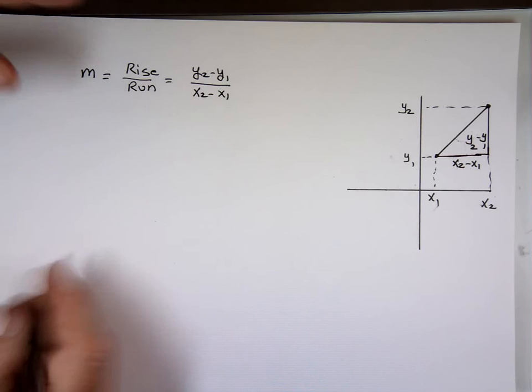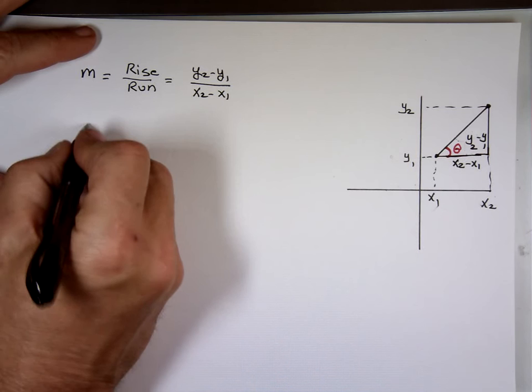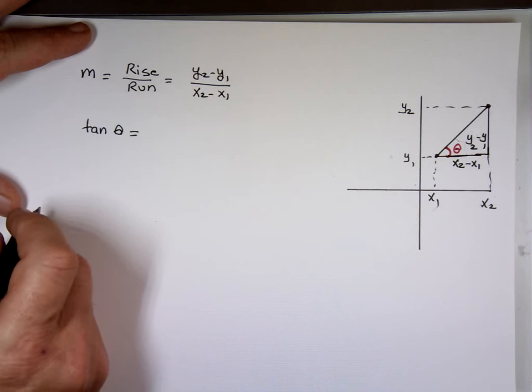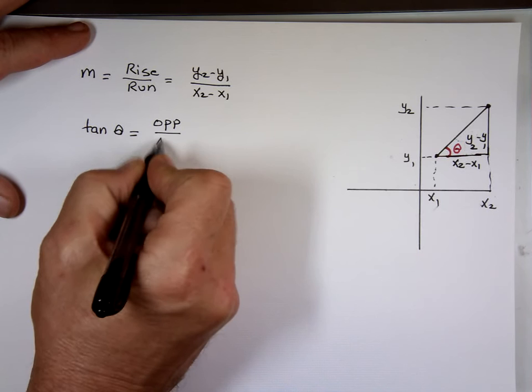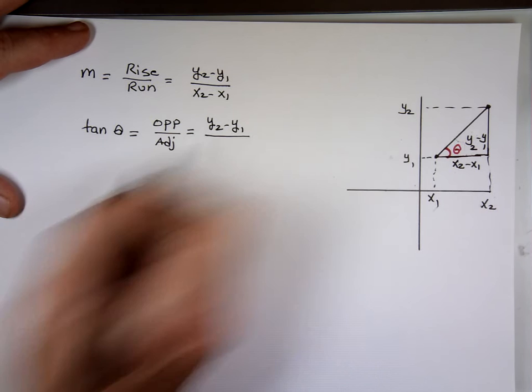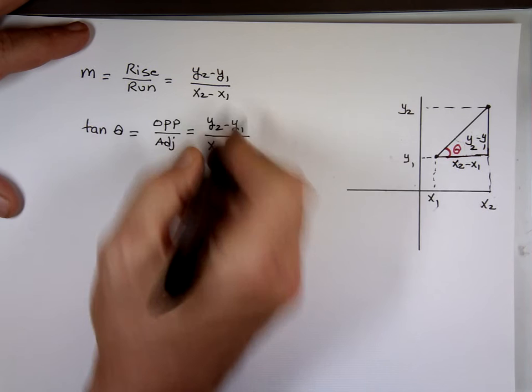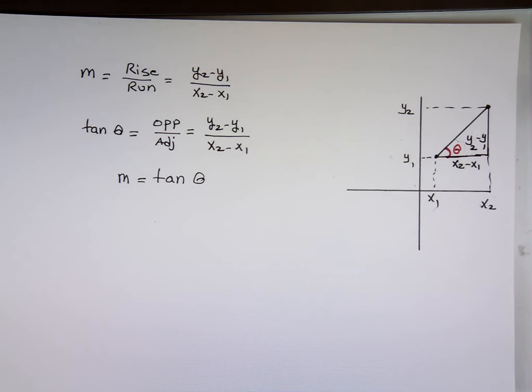If I call this angle theta, what is the tangent of theta? What is the opposite side and what is the adjacent side in this picture? The opposite is Y2 minus Y sub 1, and the adjacent side is X sub 2 minus X sub 1. And guess what? Aren't these two the same? So the slope is nothing more than tangent theta. If you know the slope, you know what the angle is. The slope is the tangent of that angle.